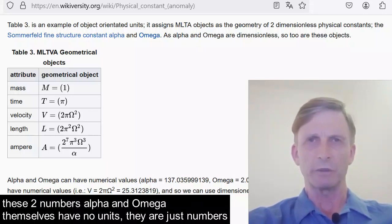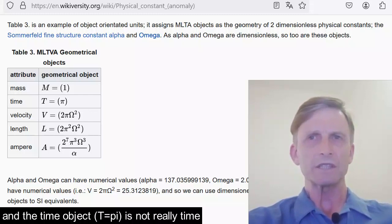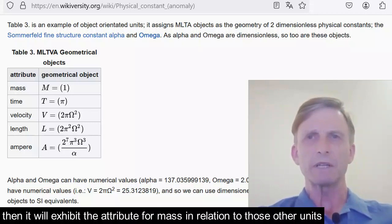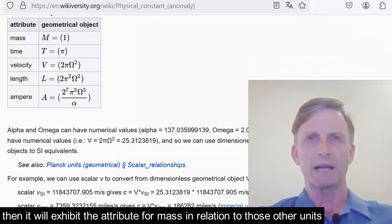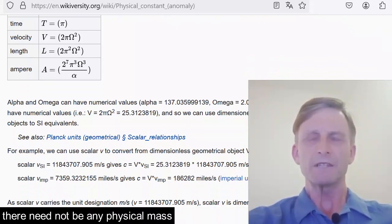These two numbers, alpha and omega, themselves have no units; they're just numbers. So a mass object is not really a mass as we understand it, and the time object is not really time. However, if I put the mass object with other objects such as length or time, then it will exhibit the attribute for mass in relation to those other units. There need not be any physical mass.